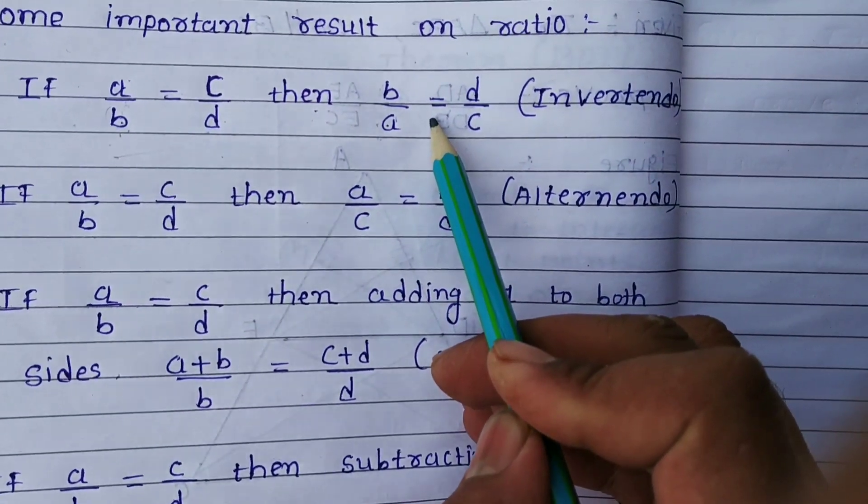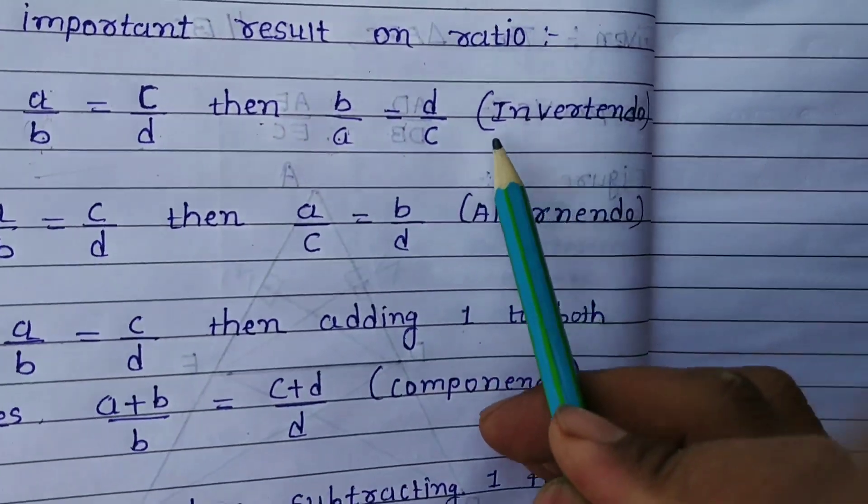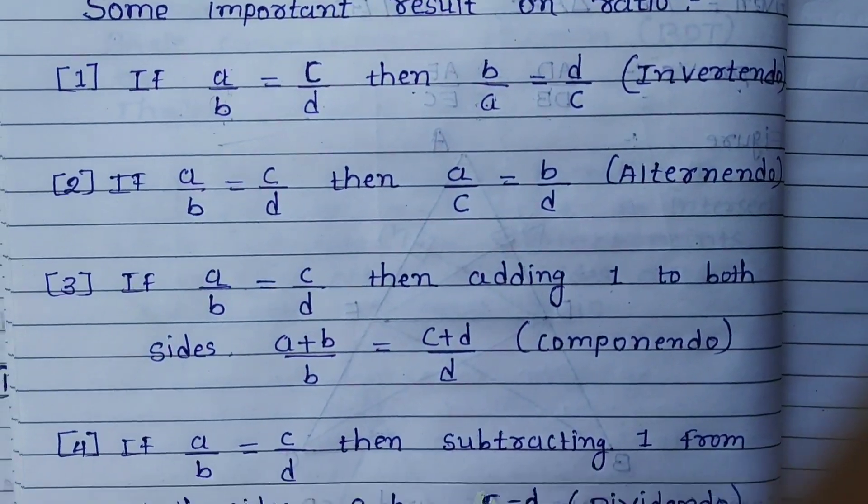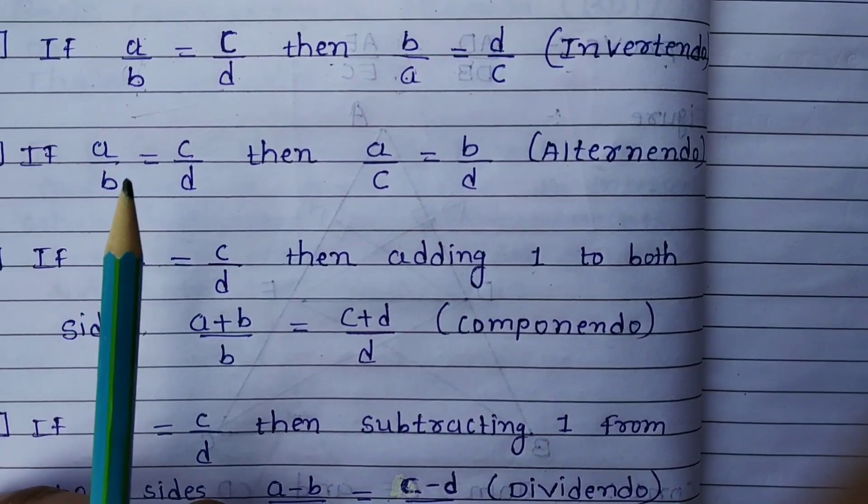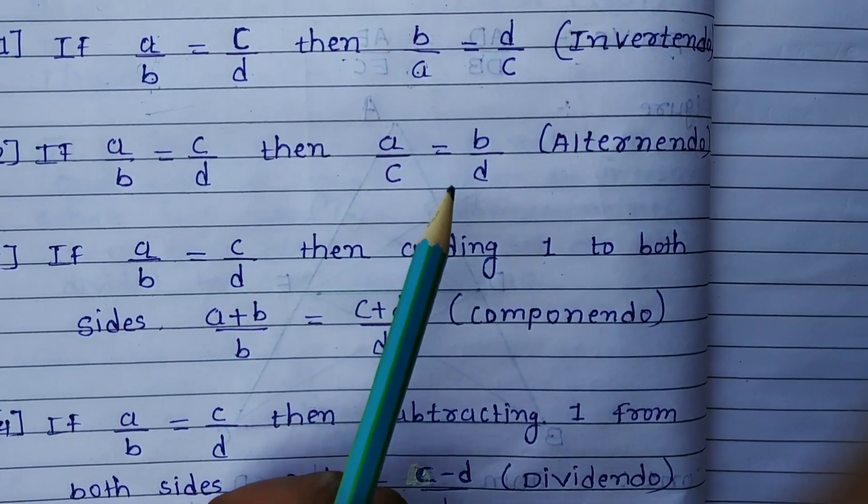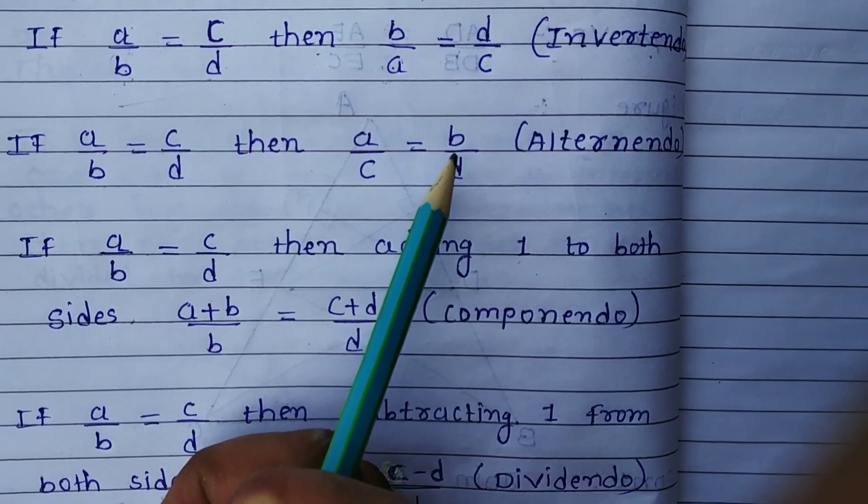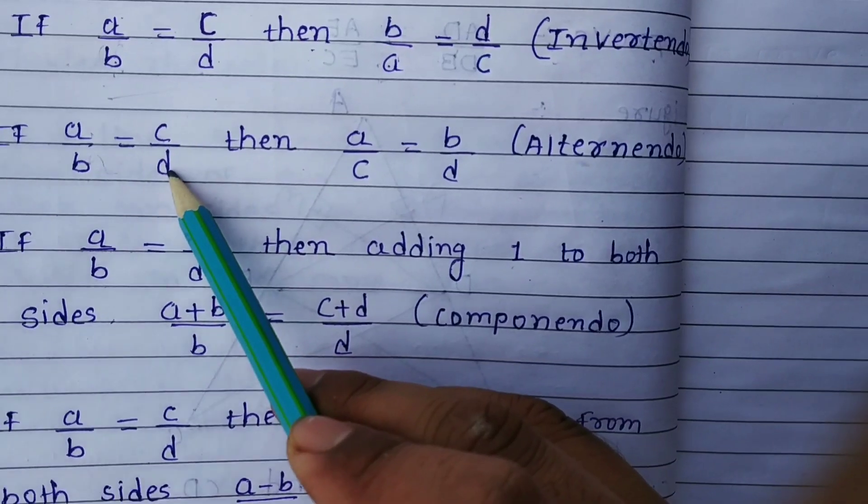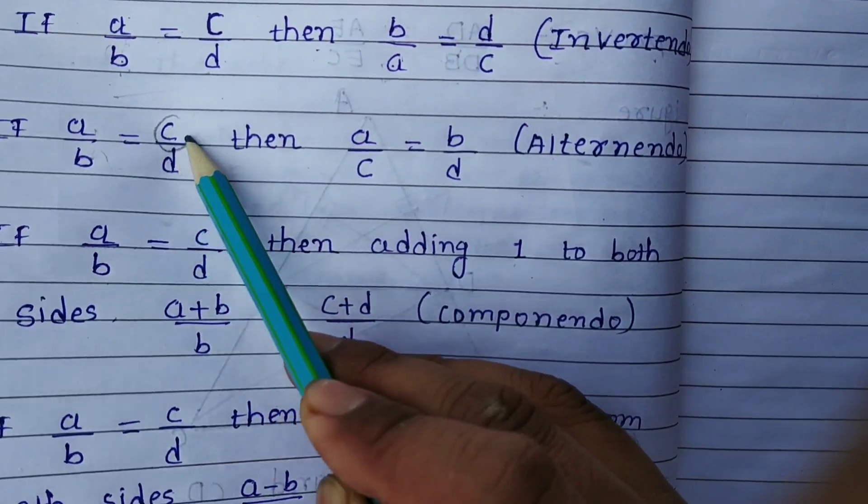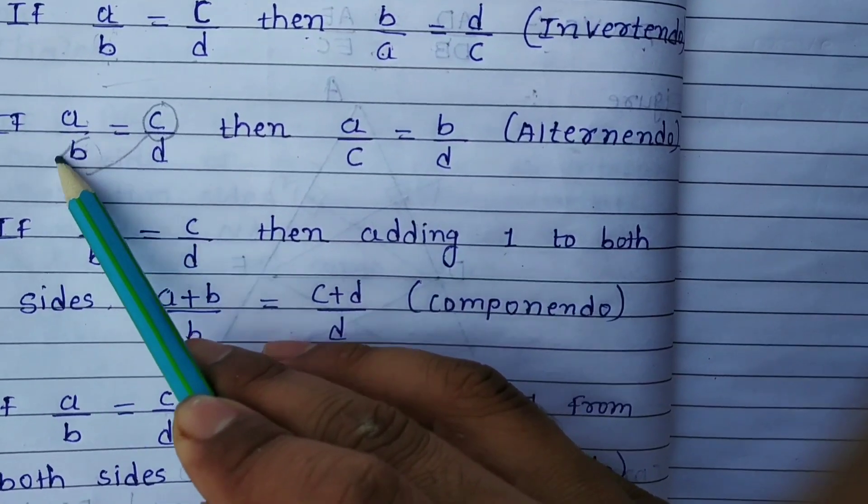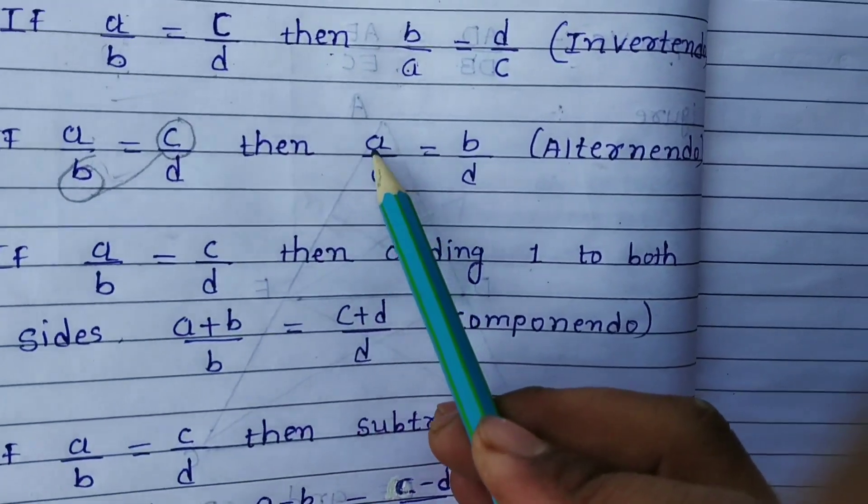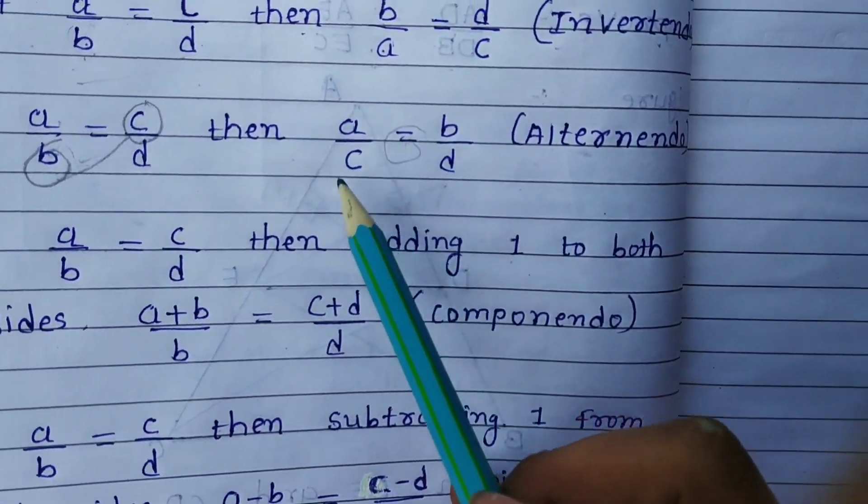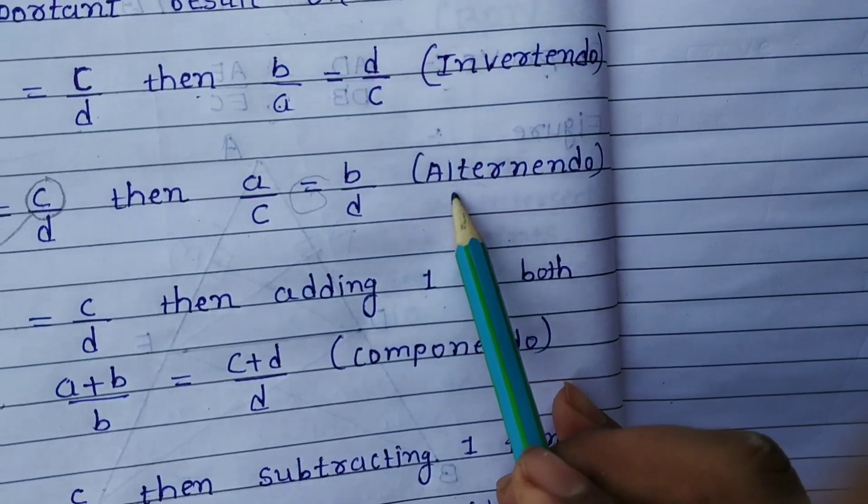If a upon b is equal to c upon d, then a upon c is equal to b upon d. This is the answer. It is known as alternendo.